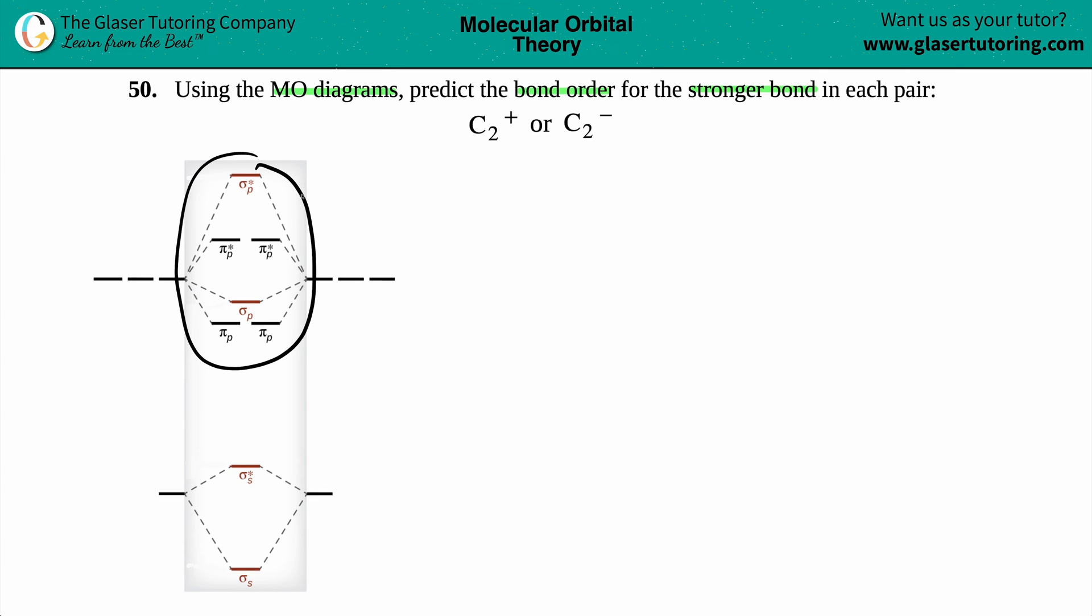These molecular diagrams you will use for groups 1 through 5 on the periodic table, and then groups 6 through 8, so like 6A, 7A, and 8A, those you will use the symmetrical molecular orbital diagram. But in this case, we're dealing with carbon, so here it is.